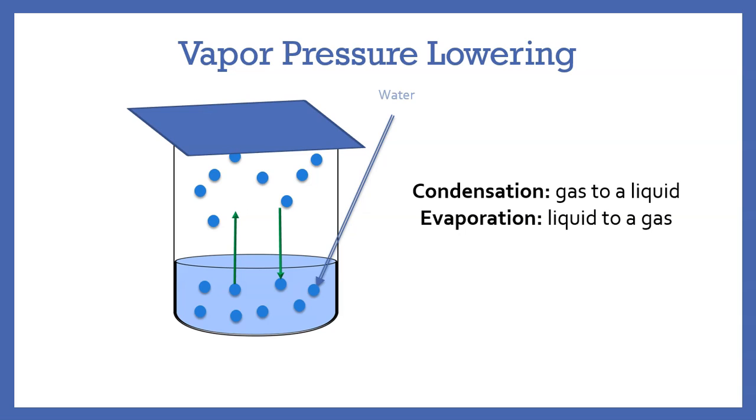When we talk about vapor pressure lowering, we have to talk about what's happening in the sealed system. What's occurring is condensation and evaporation, meaning the liquid is turning into a gas and the gas is turning into a liquid. It's a system occurring, and while this happens, it's going to reach equilibrium.